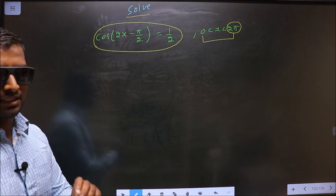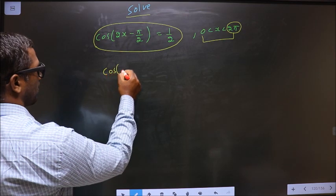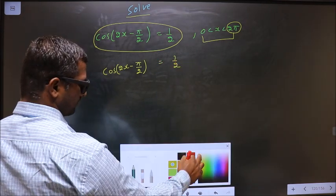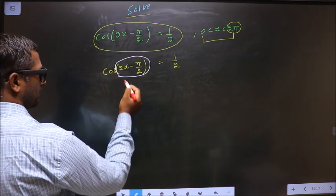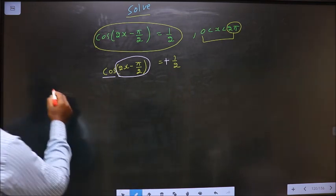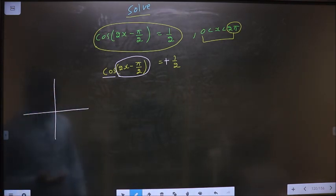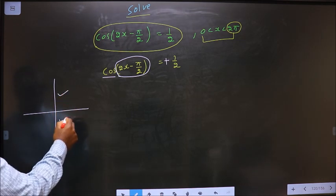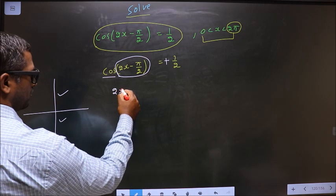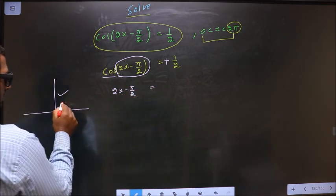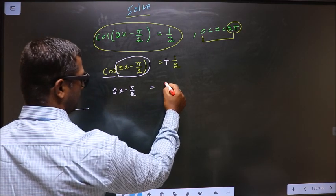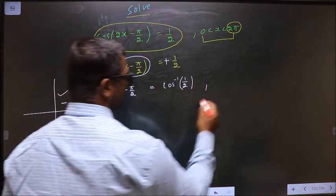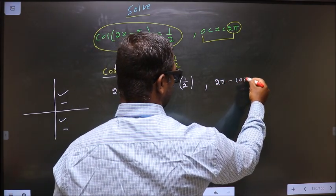The given equation is cos(2x - π/2) = 1/2. Here it is cos and it is positive. So check: in what quadrants is cos positive? It is all silver tea cups — cos is positive in the first and in the fourth. So 2x - π/2 equals, for an angle in the first quadrant, directly cos⁻¹(1/2). For the fourth quadrant, we do 2π minus cos⁻¹(1/2).